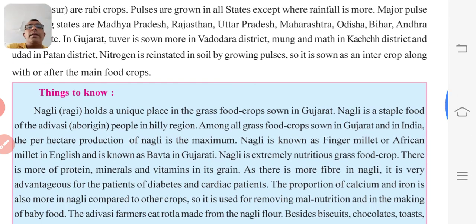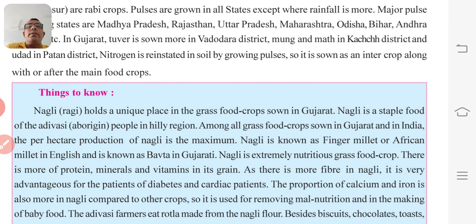Now, things to know: Nagali or Ragi holds a unique place among grass food crops grown in Gujarat. Nagali is the staple food of Adivasi people in the hilly region. Among all grass food crops grown in Gujarat and India, the per hectare production of Nagali is the maximum. Nagali is known as finger millet or African millet.